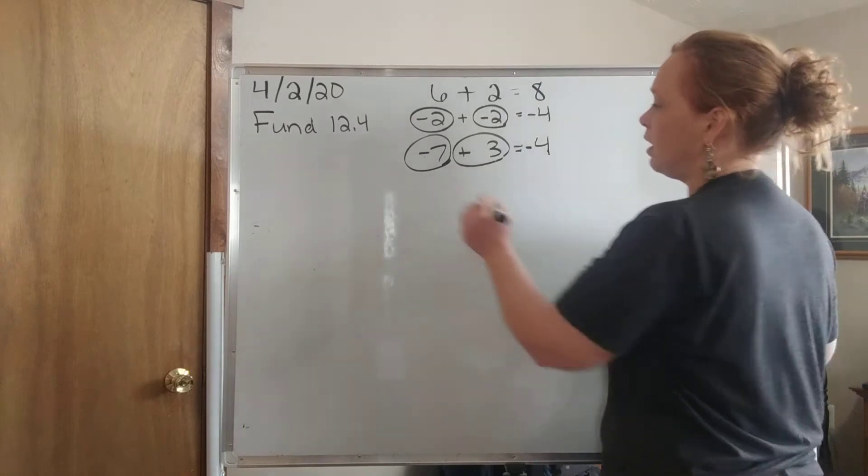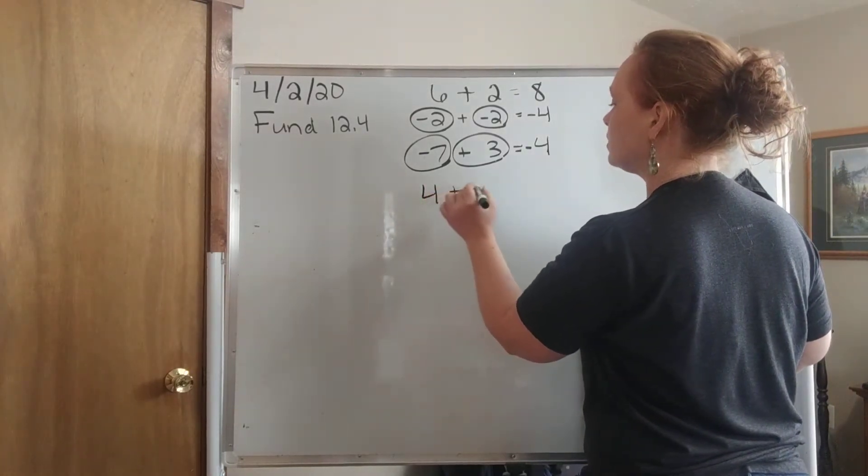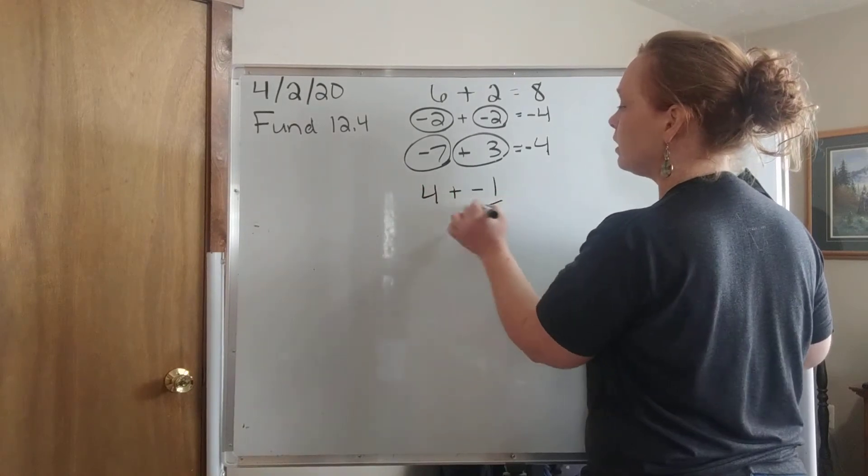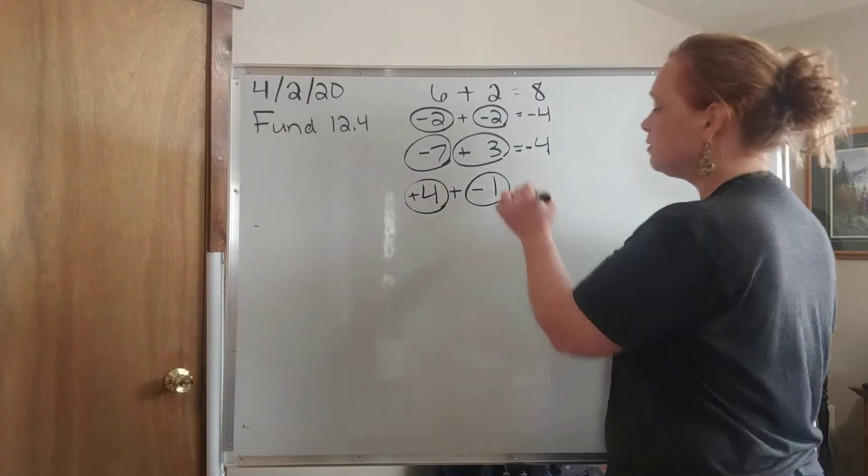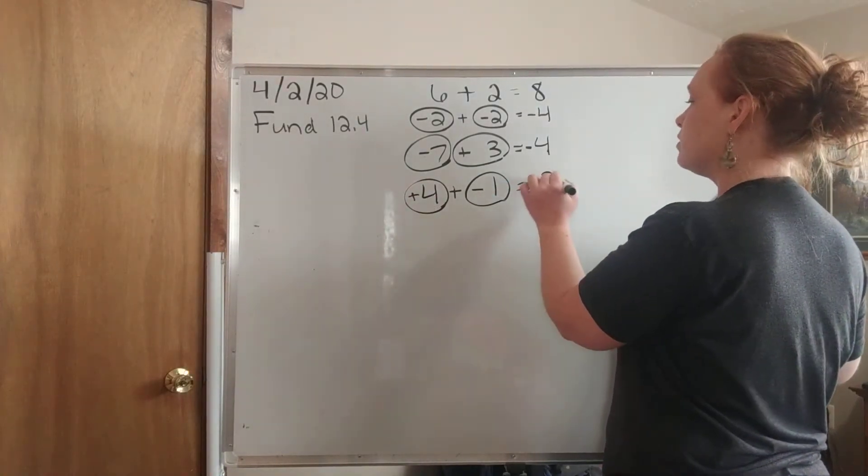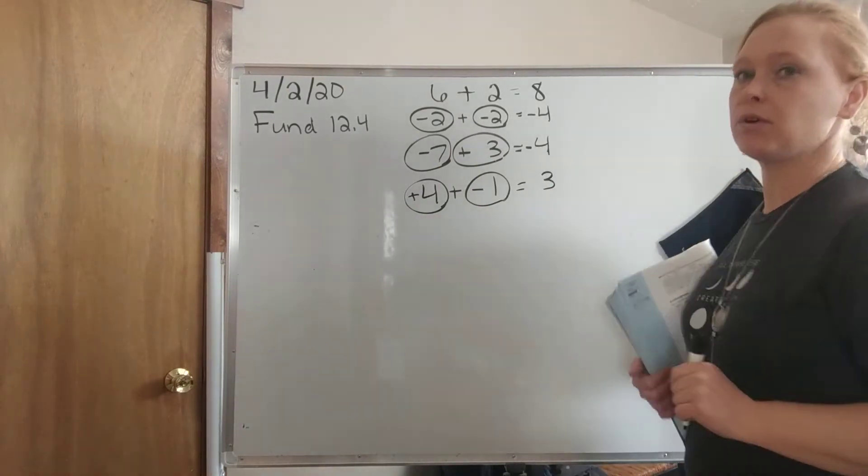We had one that might look like this: 4 plus negative 1. In this case, we're combining these two numbers. It's positive. So we would say 4 minus 1 is 3 and we would keep the sign of the bigger number, so it'd be positive 3.